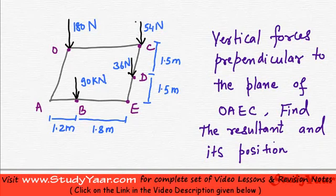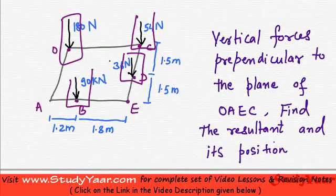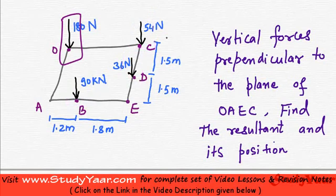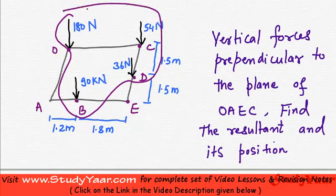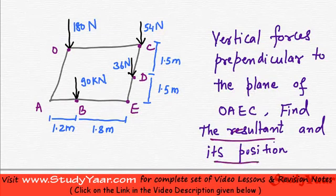As you would realize, all these forces are parallel to each other. They are not in the same plane. These are not coplanar system of forces, these are parallel system of forces. It is given that vertical forces perpendicular to the plane are acting as shown. We have to find the resultant and its position.